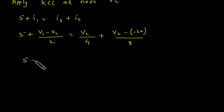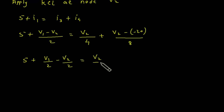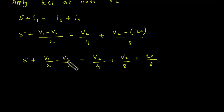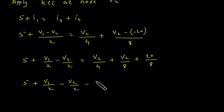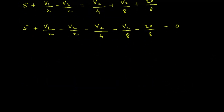Substituting: 5 + (V1 minus V2) / 2 = V2/4 + (V2 minus 20) / 8. Rearranging all terms to one side: 5 + V1/2 minus V2/2 minus V2/4 minus V2/8 minus 20/8 equals 0.